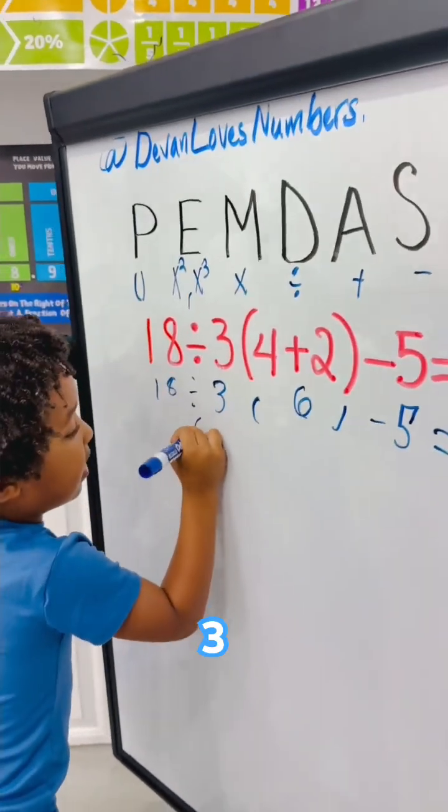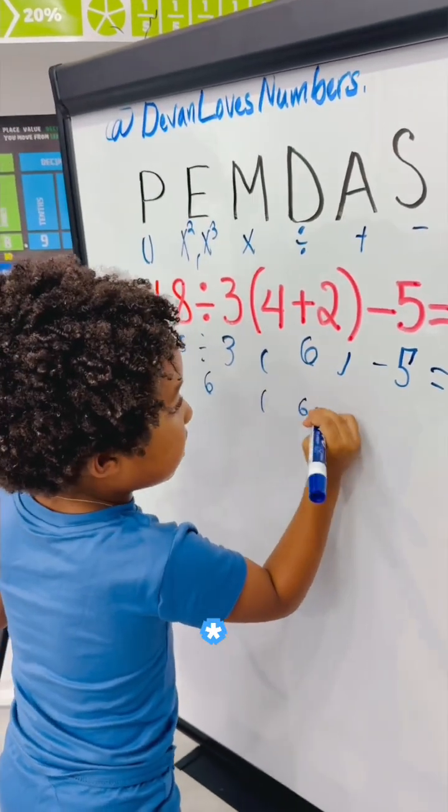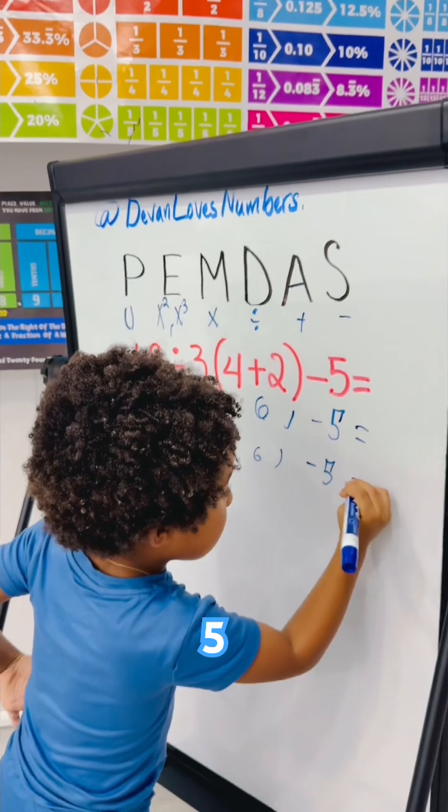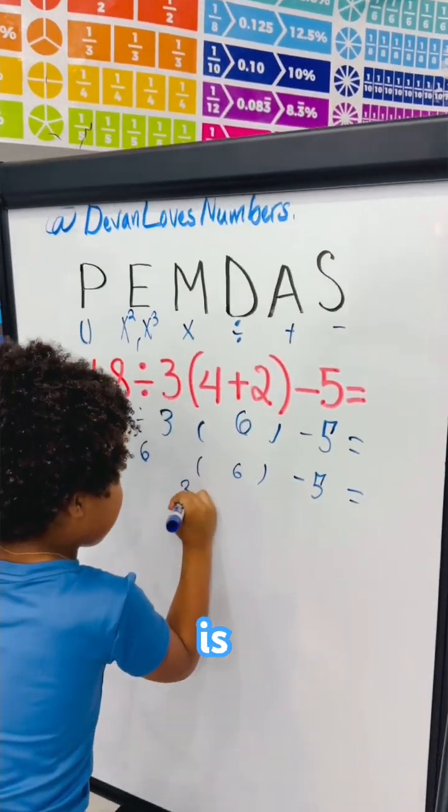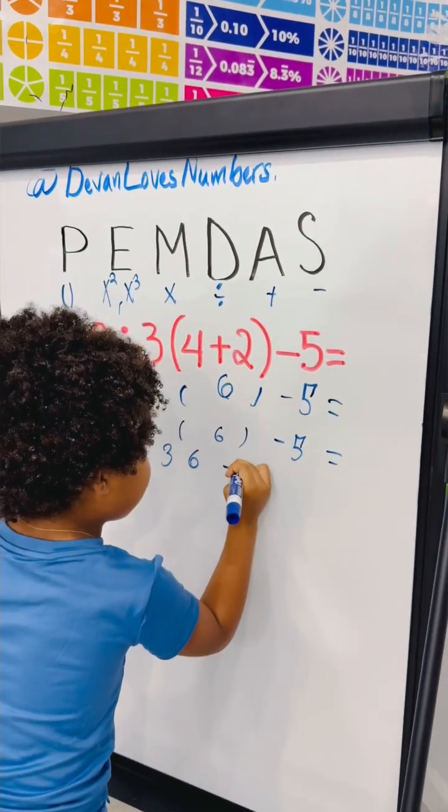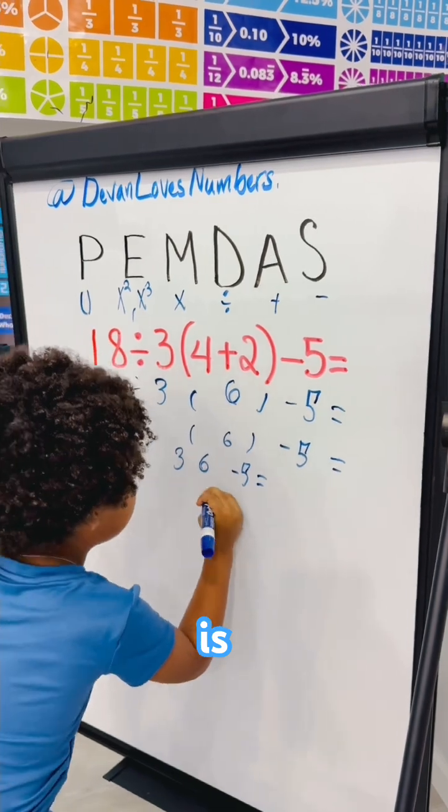Eighteen divided by three is six. Six times six minus five. Six times six is thirty-six. Thirty-six minus five is thirty-one.